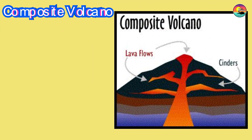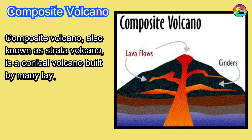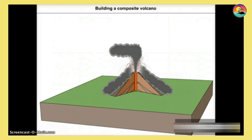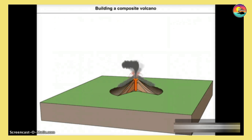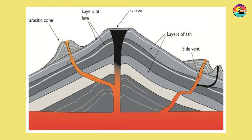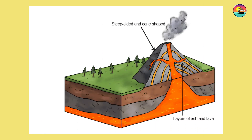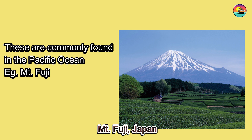Composite Volcano, also known as Stratovolcano, is a conical volcano built by many layers of hardened lava, pumice, and volcanic ash. These are commonly found in the Pacific Ocean. For example, Mount Fuji, Japan.